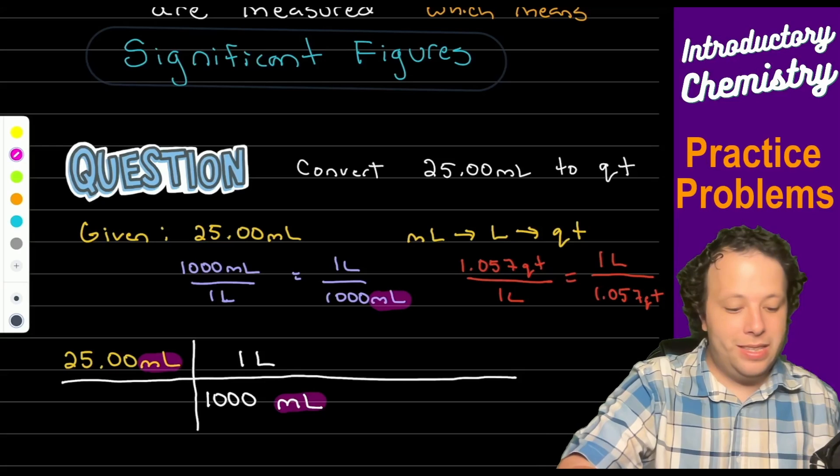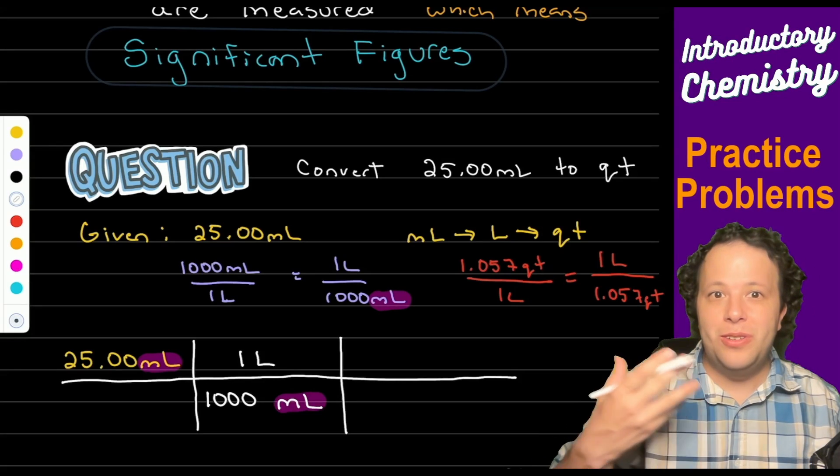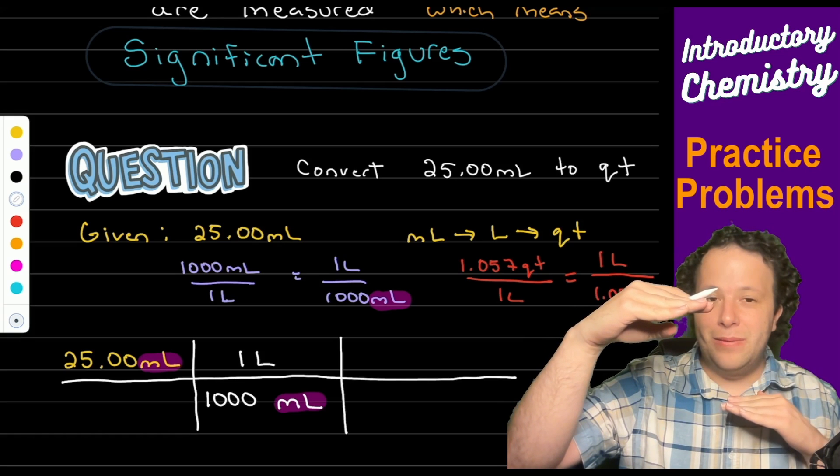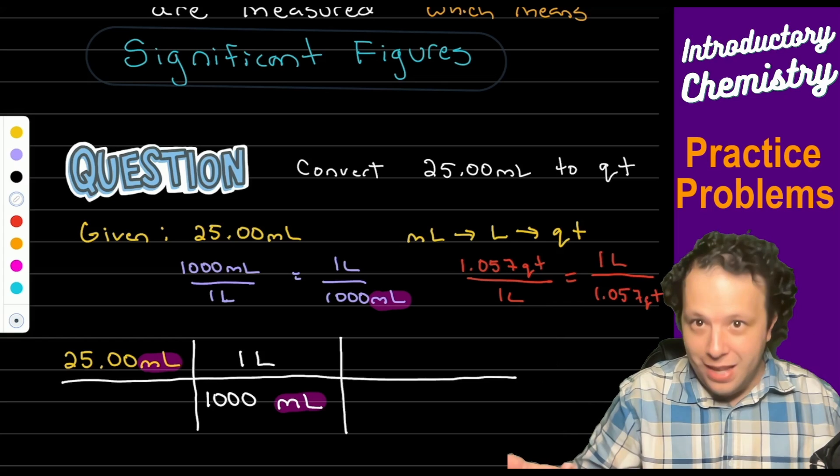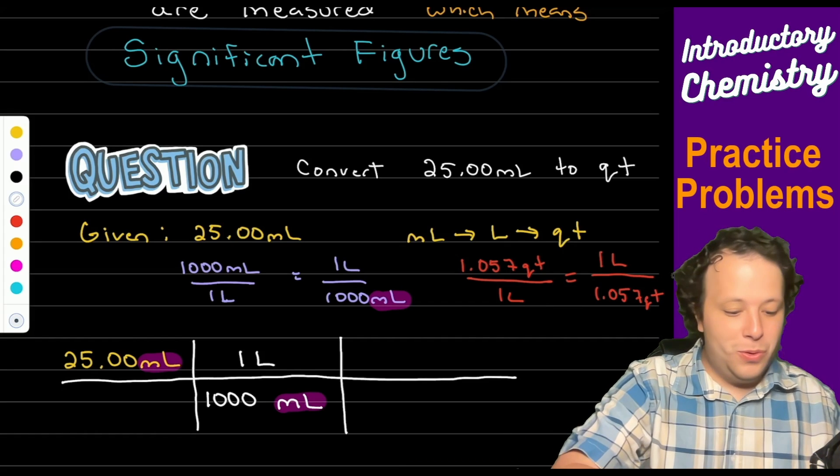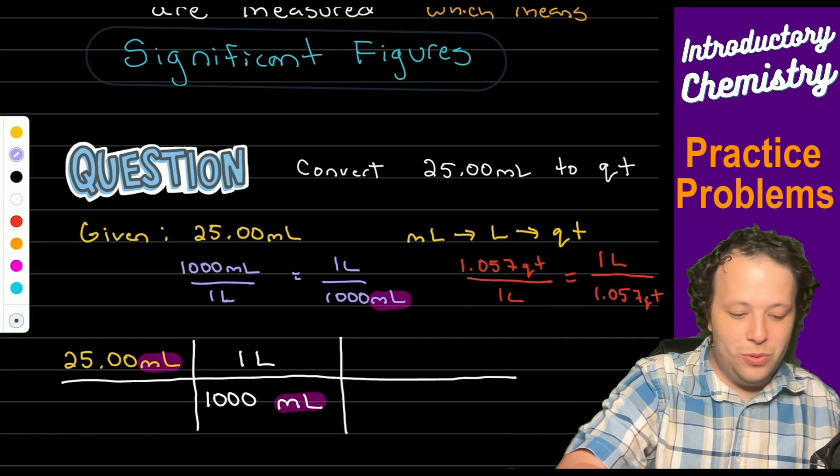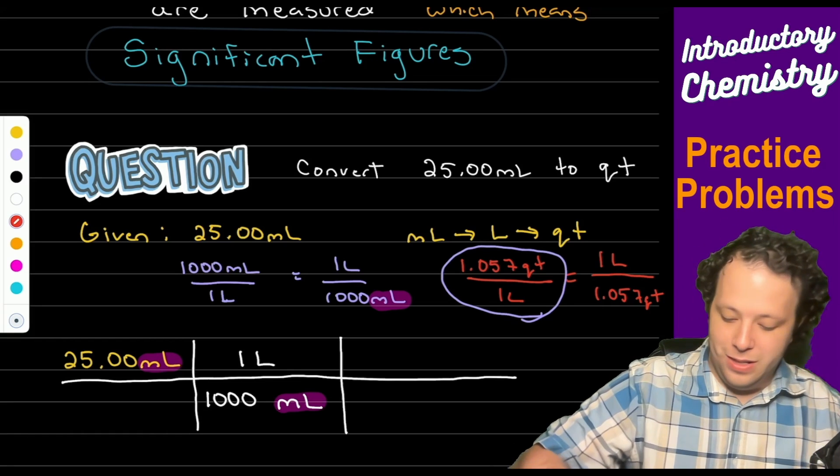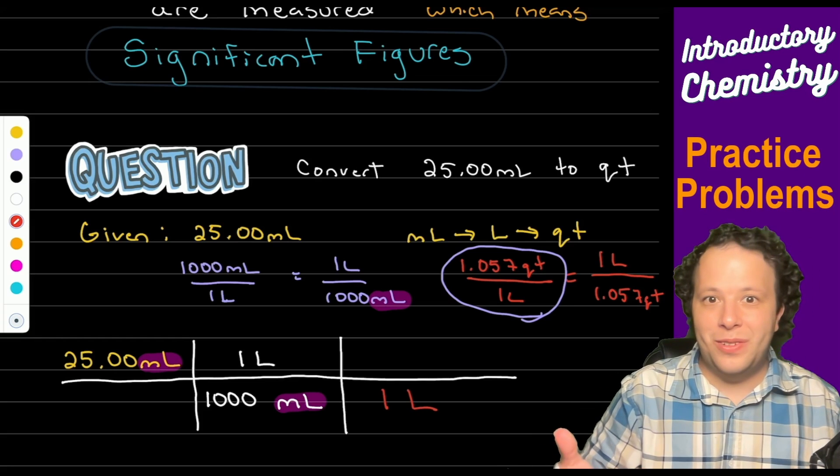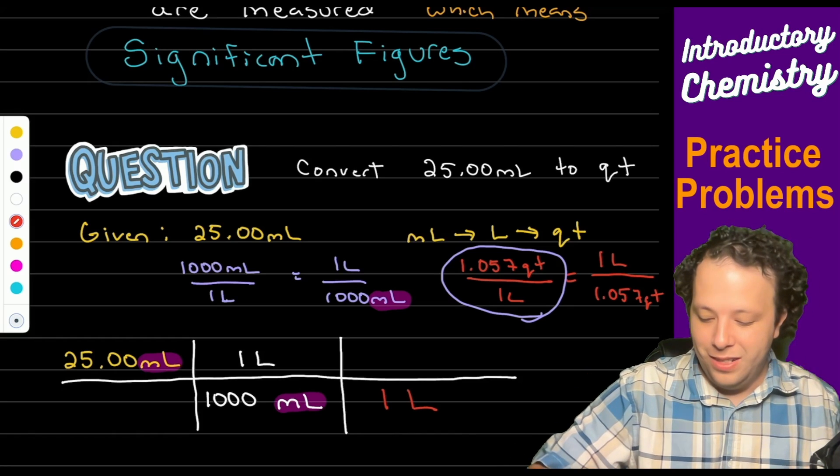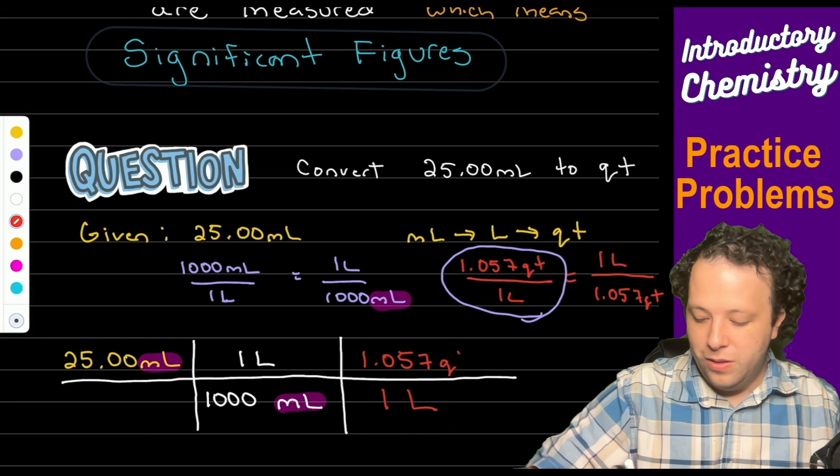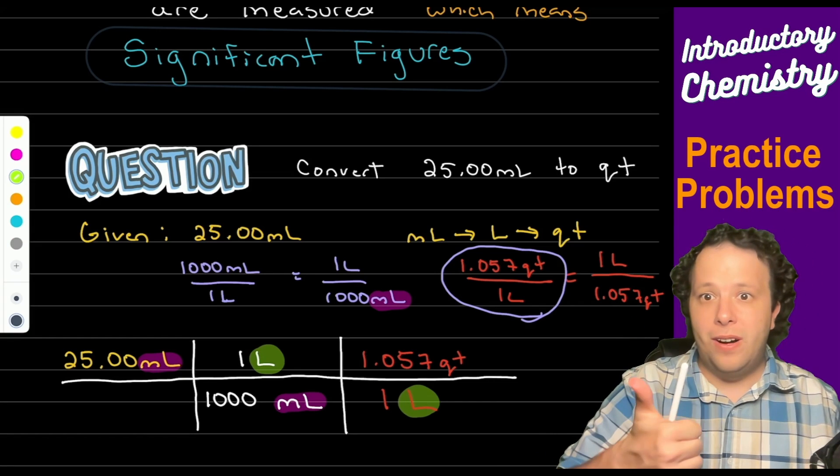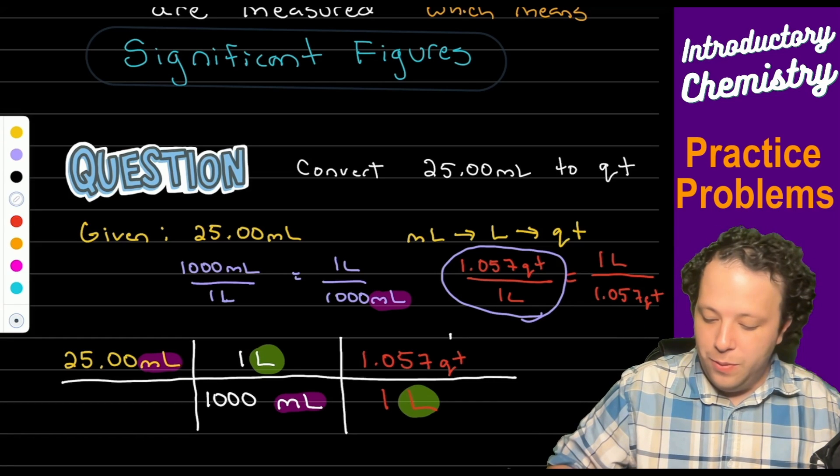We now have to use our next step. So now we have liters on one side on top and so we need to put liters on the bottom to cancel that one out now. When we do that next one we see liter is on bottom, so we will now have liters there and then we will put our quarts on top. When we do that we see liters cancels liters and we are left with the unit that we want.